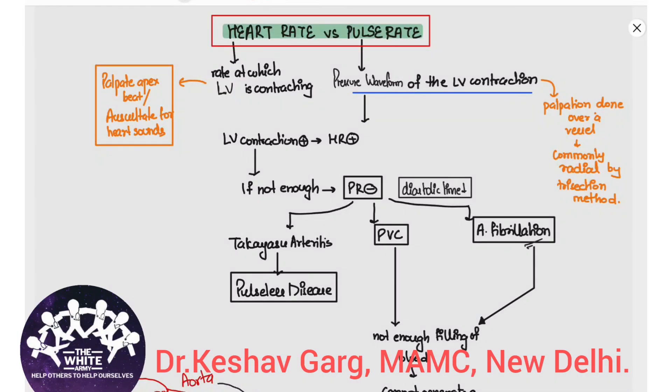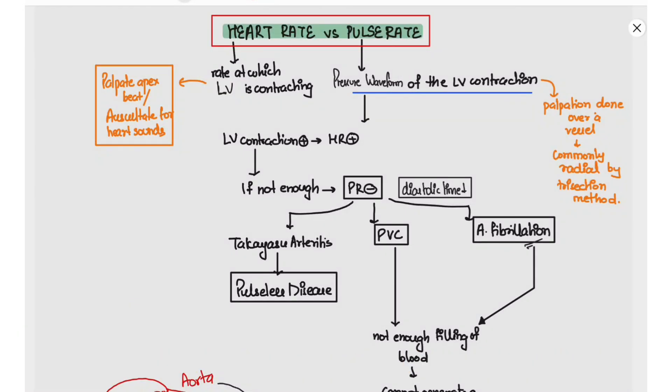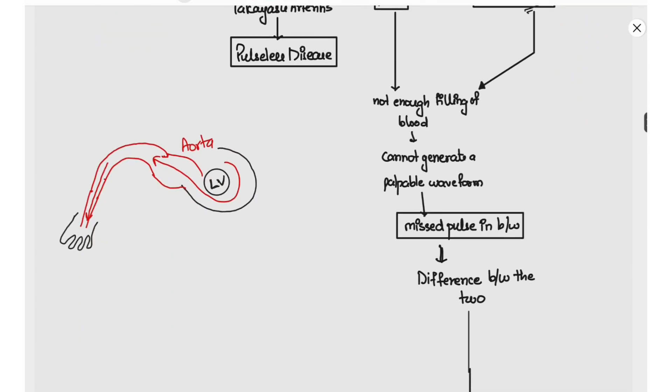In this video we will be discussing the difference between heart rate and pulse rate. Heart rate is the rate at which the left ventricle is contracting, whereas pulse rate is the rate at which the pressure waveform of the left ventricle contraction is being generated.